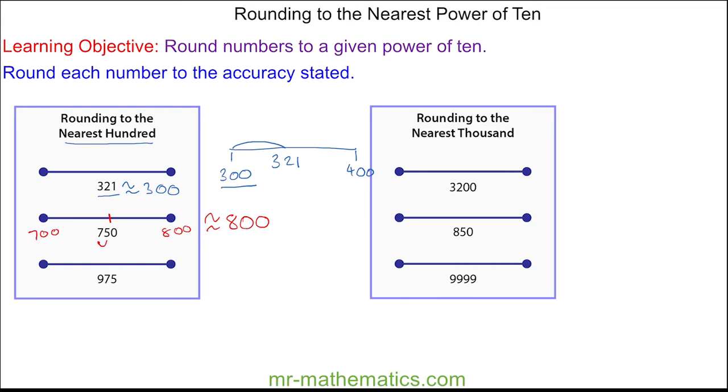And 975 is between 900 and 1000. And it is approximately here, so it does become rounded to 1000.